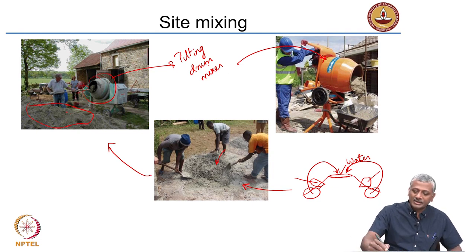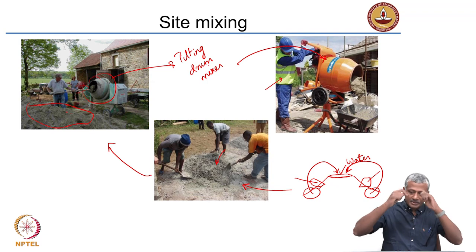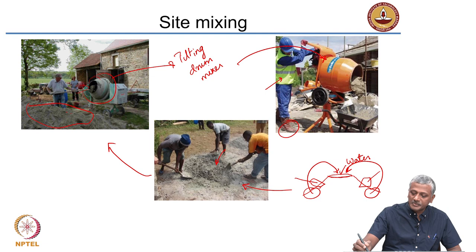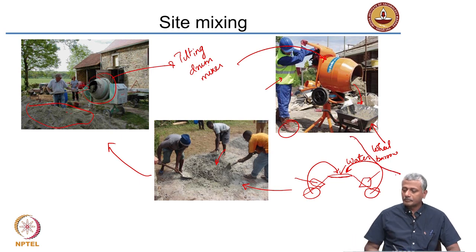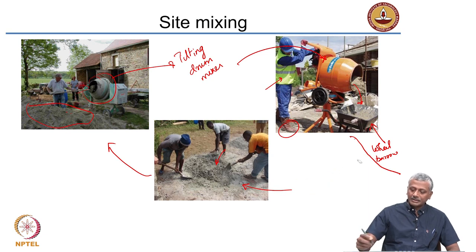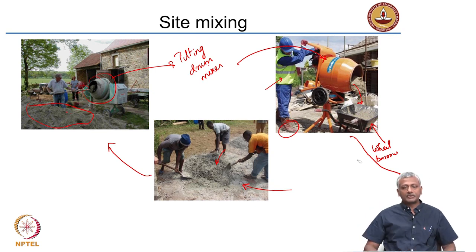This is a more controlled site, as you can see from the proper protective equipment that this person is wearing: reflective jacket, helmet, steel-toed shoes, and so on. The mixer is mixing the concrete that is getting dispensed into a wheelbarrow. The wheelbarrow is used for delivering concrete to where it is supposed to go.